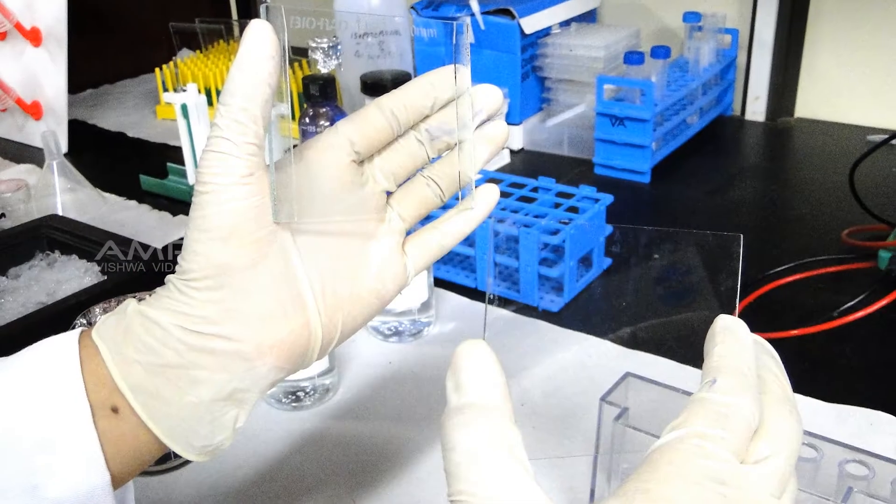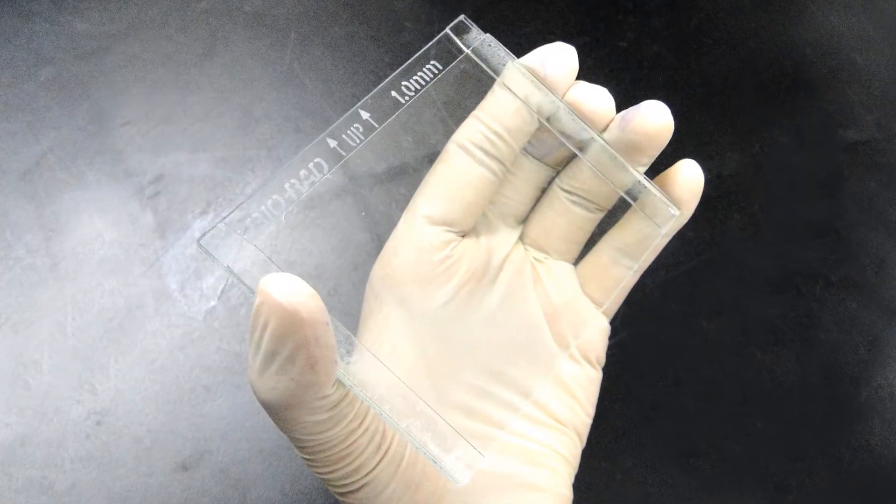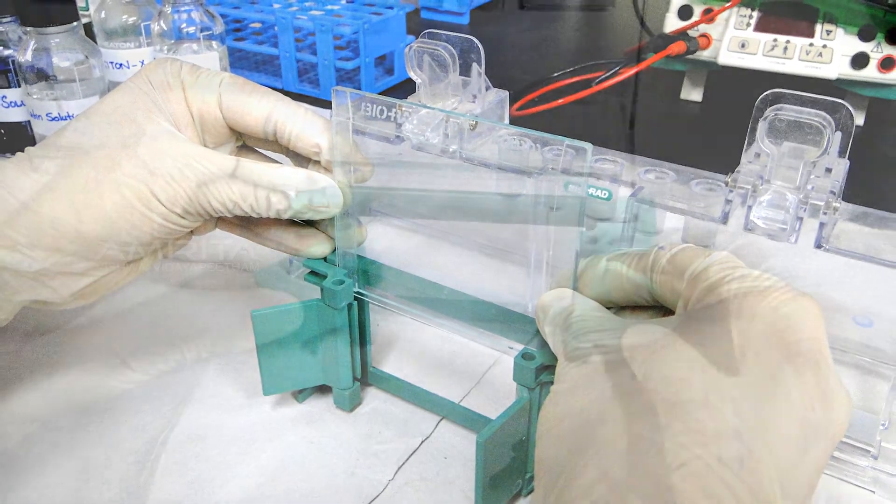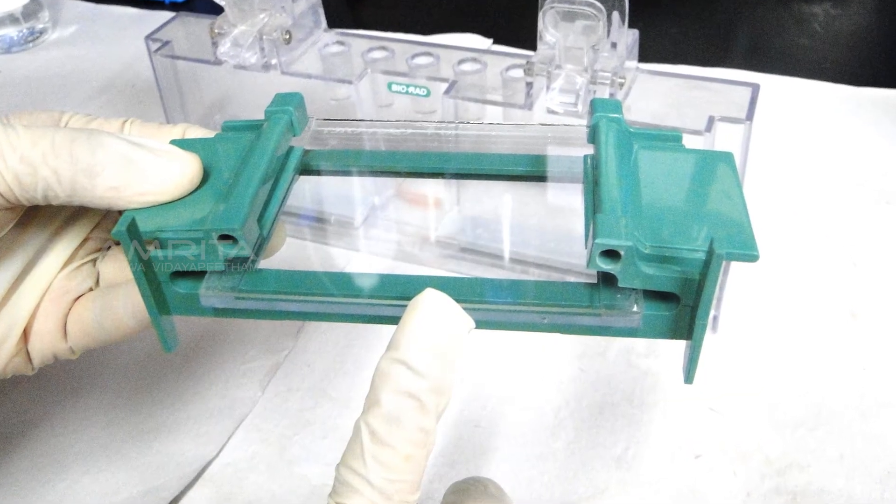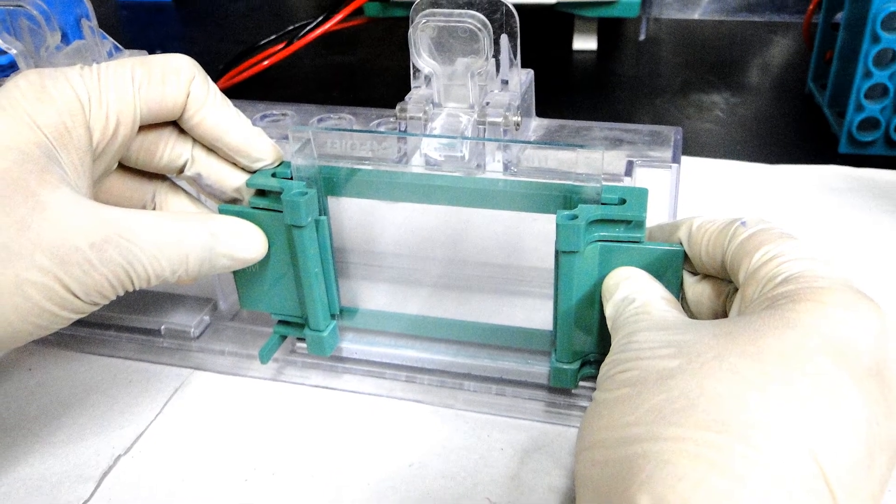Procedure: Assemble the glass plates on a clean surface. Lay the longer glass plate down first and then place a shorter glass plate on top of it. Embed them into the casting frame and clamp them properly. Make sure that the bottom ends of the glass plates are properly aligned. Place the casting frame onto the casting stand.